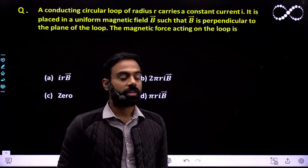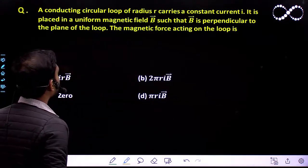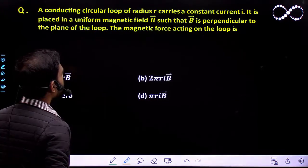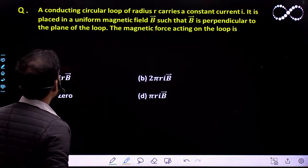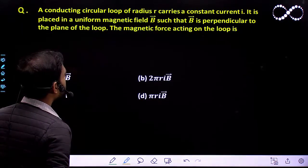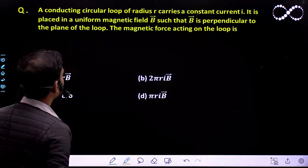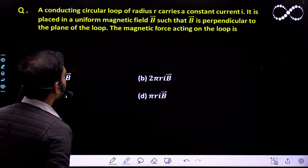Hello students, let us see this question here. A conducting circular loop of radius R carries a constant current I. It is placed in uniform magnetic field B such that B is perpendicular to the plane of the loop. The magnetic force acting on the loop is...